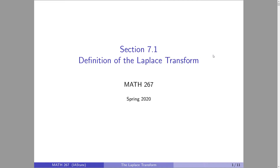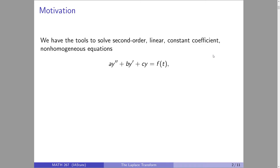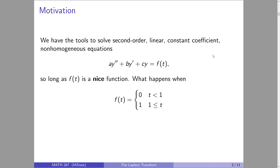Let's motivate why we're even going to be talking about this stuff. If you let your mind float back, we can now completely solve any second-order linear constant-coefficient non-homogeneous differential equation. But there's a caveat: that function f on the right-hand side - the non-homogeneity - needs to be a nice function. We've looked at polynomials, exponentials, trigonometric functions, logs, secant. But what if it's a piecewise function - zero when t is less than one, and one when t is greater than one?